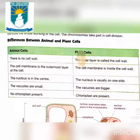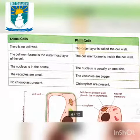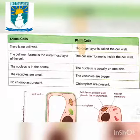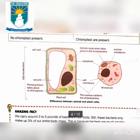In plant cells, the nucleus is usually to one side. Animal cells: the vacuoles are small, but in plant cells the vacuoles are bigger. Animal cells: no chloroplast present, but in plant cells chloroplasts are present.